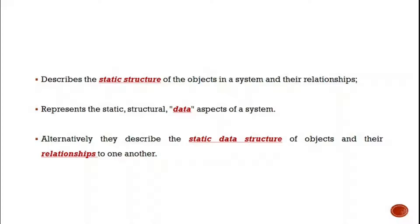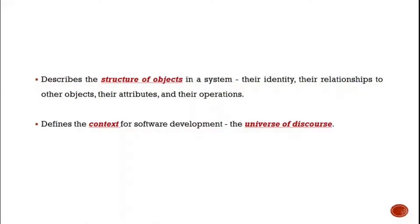The class model represents the data aspects of the system. It describes the static data structure of the objects and their relationships to one another. The class model defines the data structure of an object and defines the context for software development — that is, the idea before developing any software. The class diagram plays an important role in the development of a product.